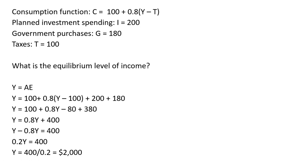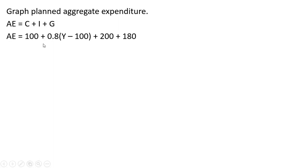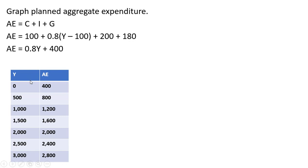Let's take a look at a graph of this. We want to graph planned aggregate expenditure. Again, planned aggregate expenditure is C plus I plus G. Plugging in for C, I, and G, as we saw on the last slide, the right-hand side simplifies down to 0.8Y plus 400. So this is what we want to graph — planned aggregate expenditure as a function of income. I've put a little table together here. If Y is 0, AE is 400.